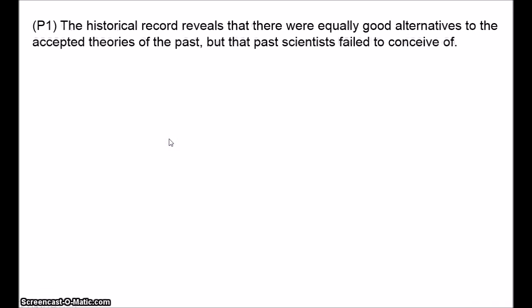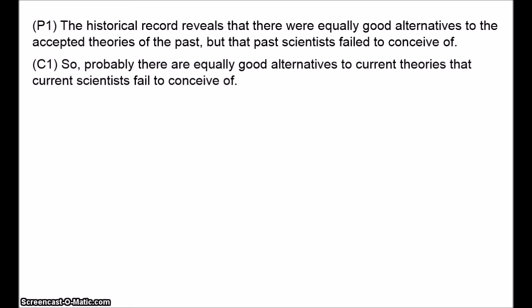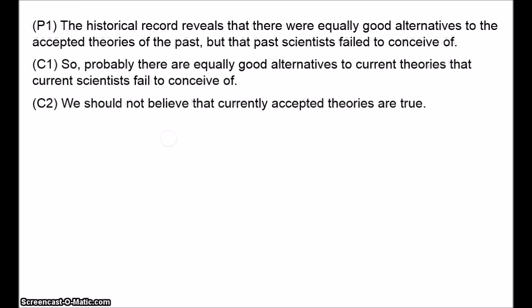Here's a formalisation of the argument. Premise one: the historical record reveals that there were alternatives to the accepted theories of the past that were equally good as accepted theories, but that past scientists failed to conceive of. From this we can conclude by induction: there are probably equally good alternatives to current theories that current scientists have failed to conceive of. And the next conclusion is, of course, that we should not believe that currently accepted theories are true.